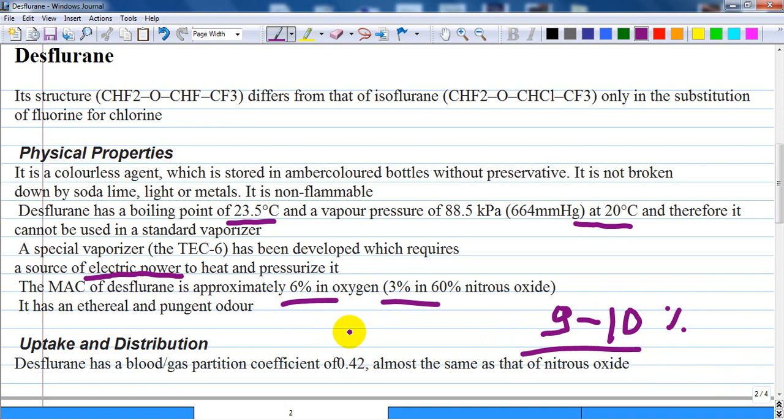How about uptake and distribution of the drug? Desflurane has a blood gas partition coefficient of 0.42, almost the same as that of nitrous oxide. Induction of anesthesia is therefore extremely rapid in theory, but limited somewhat by its pungent nature. Pungent means irritant to the airway.